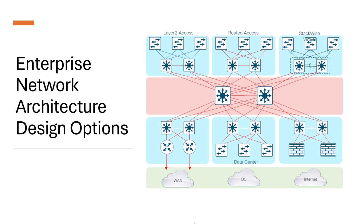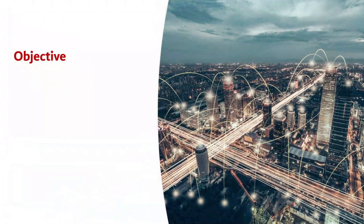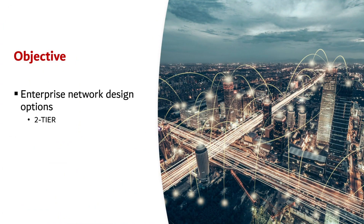Hello and welcome to this session of CCNP Encore series. In this session we'll have a look at Enterprise Network Architecture Options, a key topic for anyone designing or managing modern campus networks. By the end of the session you will have an understanding of what are two-tier and three-tier networks and what are their benefits.